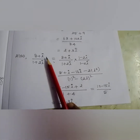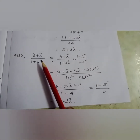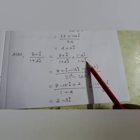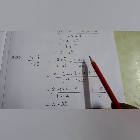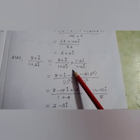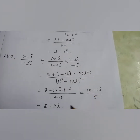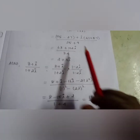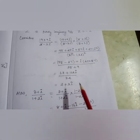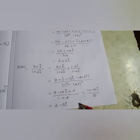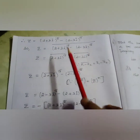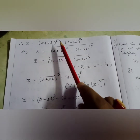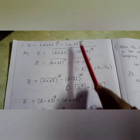Similarly, consider the next expression (8 + i)/(1 + 2i). Multiply and divide by the conjugate of the denominator, which is (1 − 2i)/(1 − 2i). In the numerator we multiply, and in the denominator we apply the a² − b² formula. I am getting it to be 2 − 3i. So the first expression gives 2 + 3i and the second gives 2 − 3i. So z becomes (2 + 3i)^15 − (2 − 3i)^15.